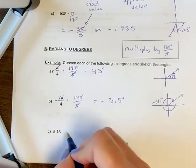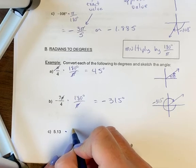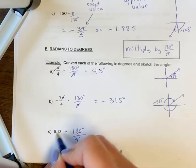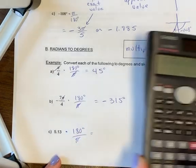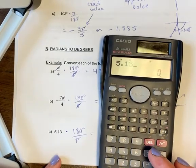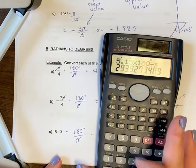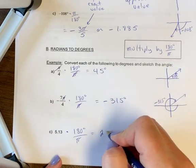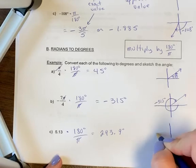Let's look at 5.13. Same strategy. This is just as a decimal, the radians. So you're going to still multiply it by 180 degrees over pi. There's nothing to cancel. This is going to be putting everything in your calculator. So you're going to go 5.13 times 180 divided by pi, and you're going to get 293.9 degrees.